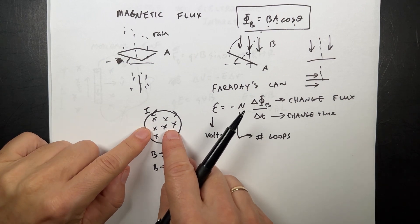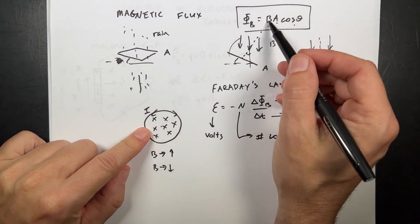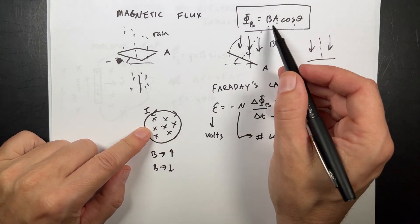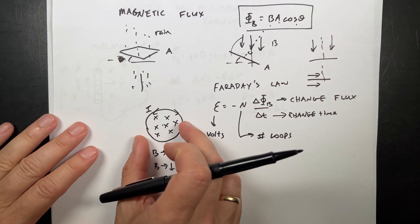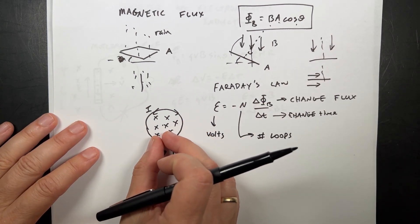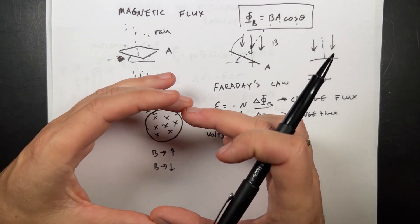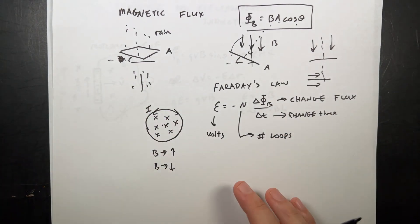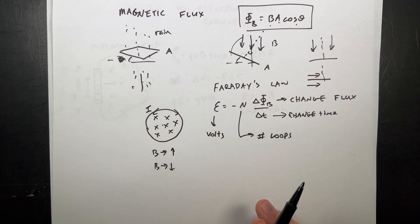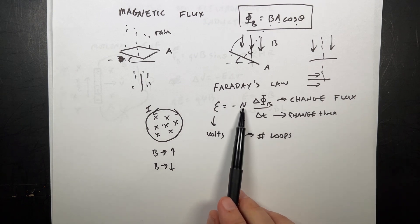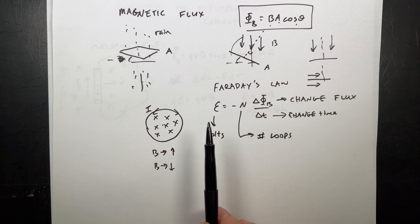And I could change the flux in any number of ways. I could change the magnetic field. I could change the area. If you take this and squish it, you decrease the area and decrease the flux. Or I could change the angle. I could take that loop and rotate it. Those would all change the flux.